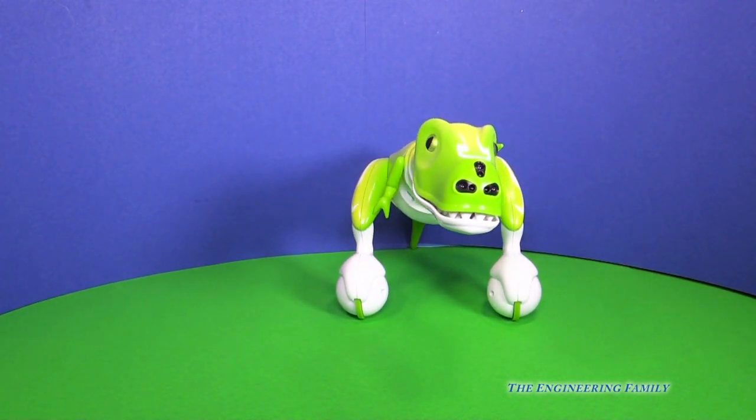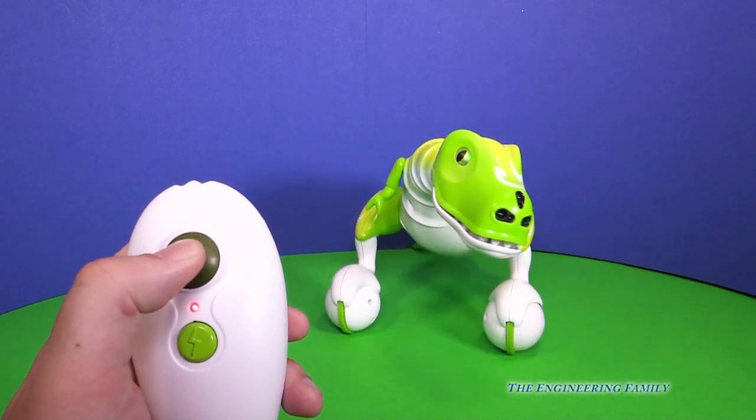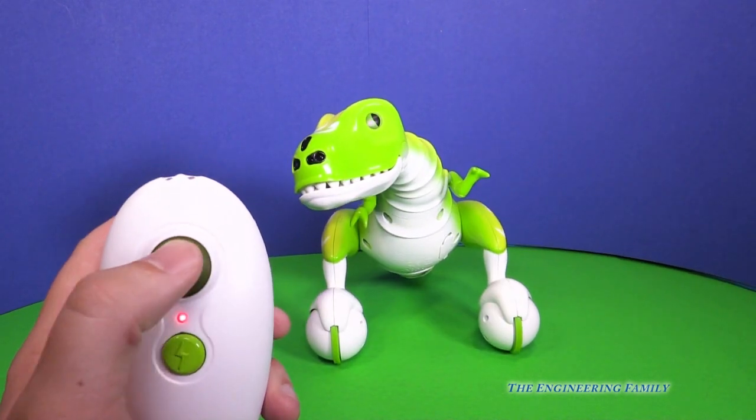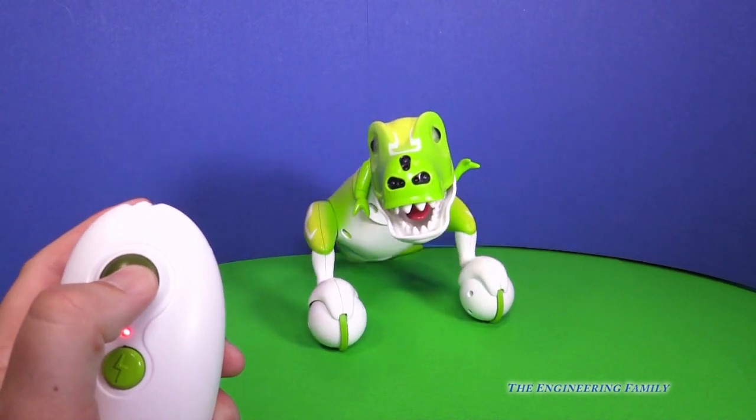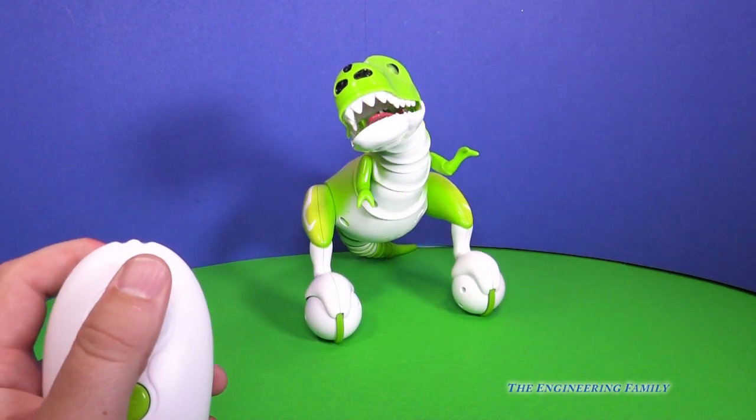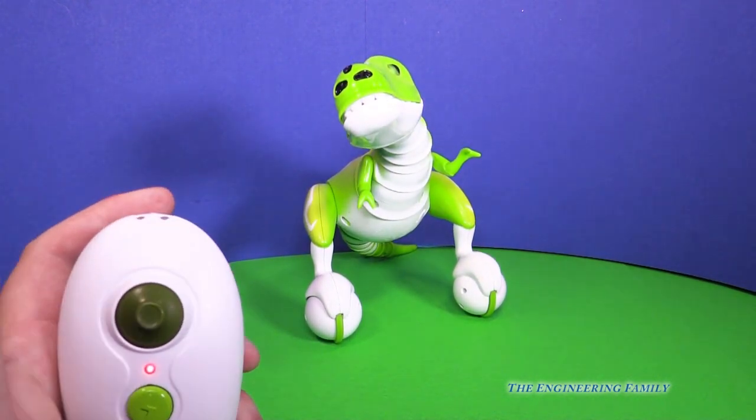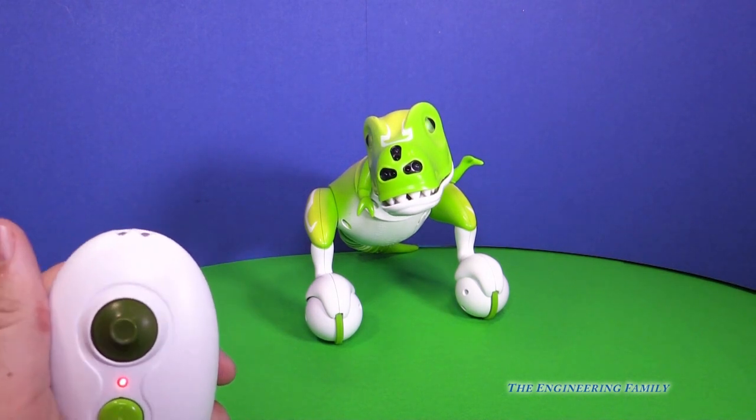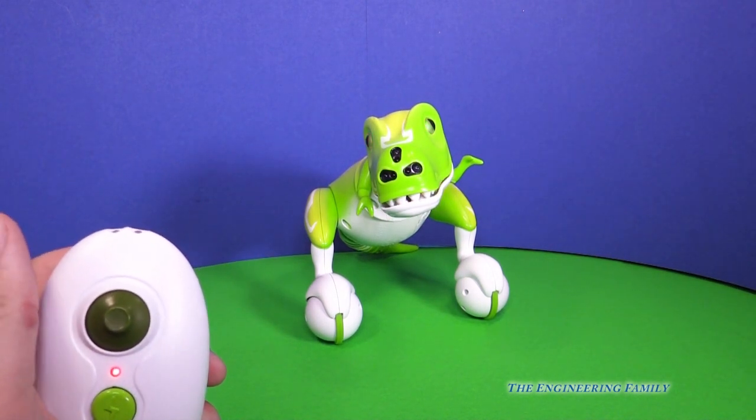So this is our Dinosaur Zoomer. It comes with this remote control. You can see you can move him around and make him go. So let's look at all the cool things we can do with Zoomer. Right, Zoomer? He says yeah.